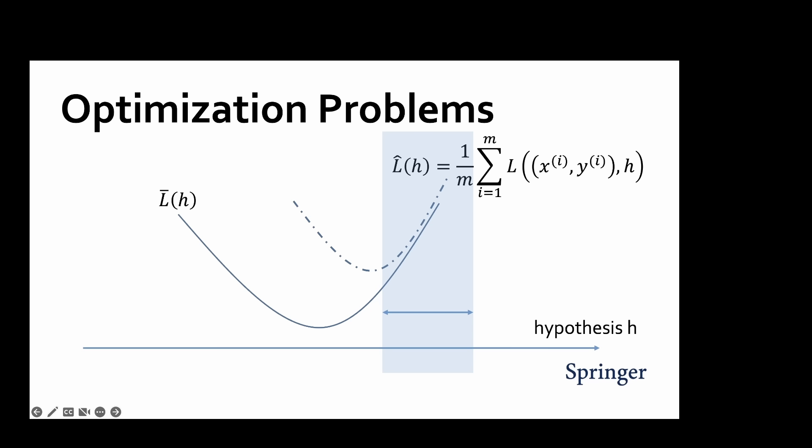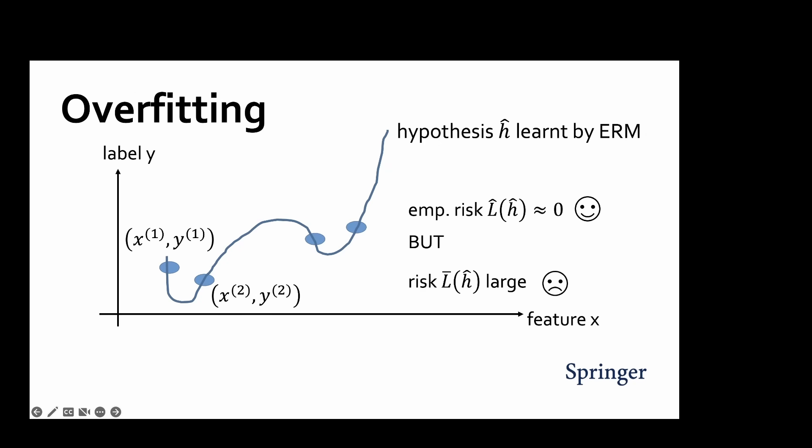There are situations where the hypothesis having minimum empirical risk actually has a large risk. A key challenge for methods based on empirical risk minimization is to ensure that the empirical risk of a learned hypothesis is a good approximation of its risk or expected loss on a randomly chosen data point.